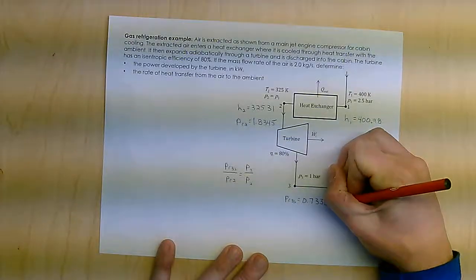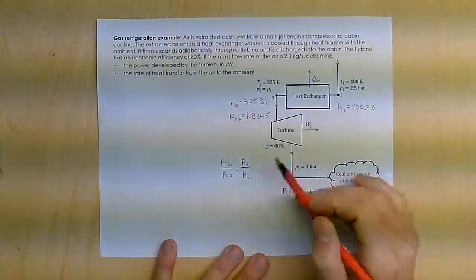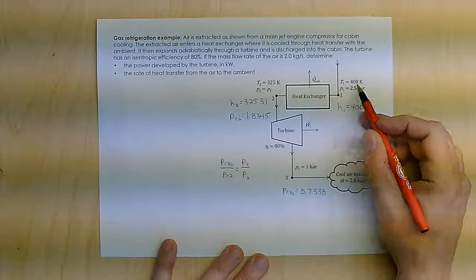So this is 2.5 times less than PR coming into it because I've got that pressure ratio of 1 over 2.5.